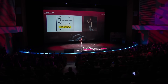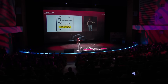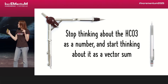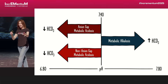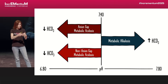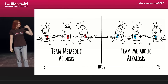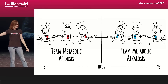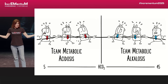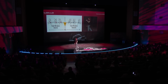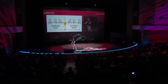Metabolic is much more complicated. We all get confused when we just think about the bicarb — you've got to interpret the bicarb in the context of the anion gap and strong ion difference. You need to stop thinking about the bicarb as a single value and start thinking about it as a vector sum. You have three possible different metabolic processes that all add up to whatever your bicarb is, and these metabolic processes can be in two different directions. It's like a tug-of-war: if team metabolic acidosis and team metabolic alkalosis are evenly matched, you can end up with a completely normal bicarb that looks like nothing's going on — but a lot is going on underlying.